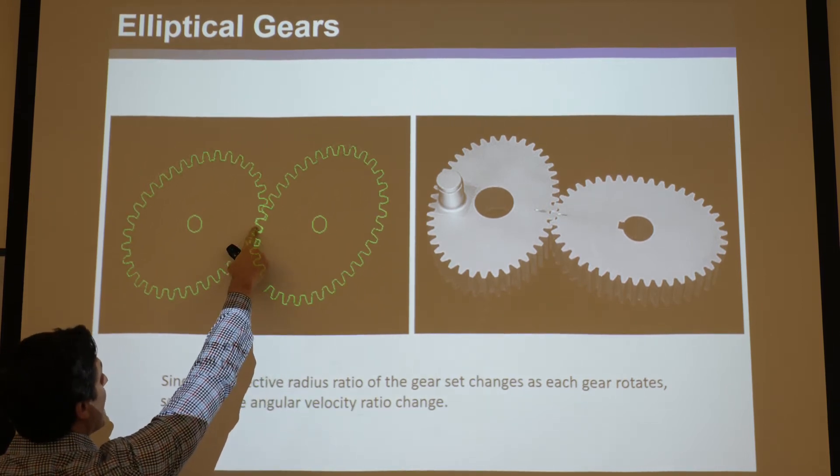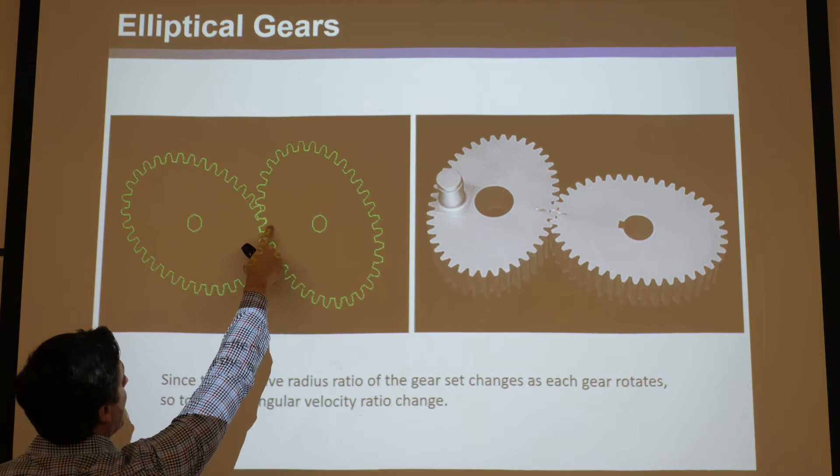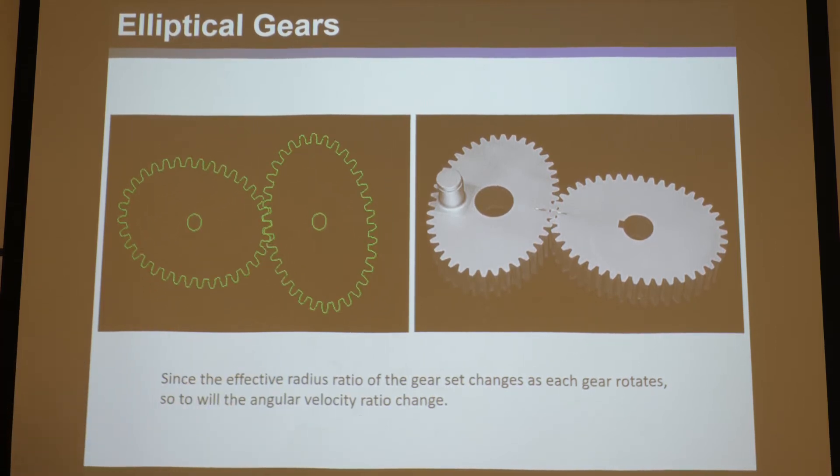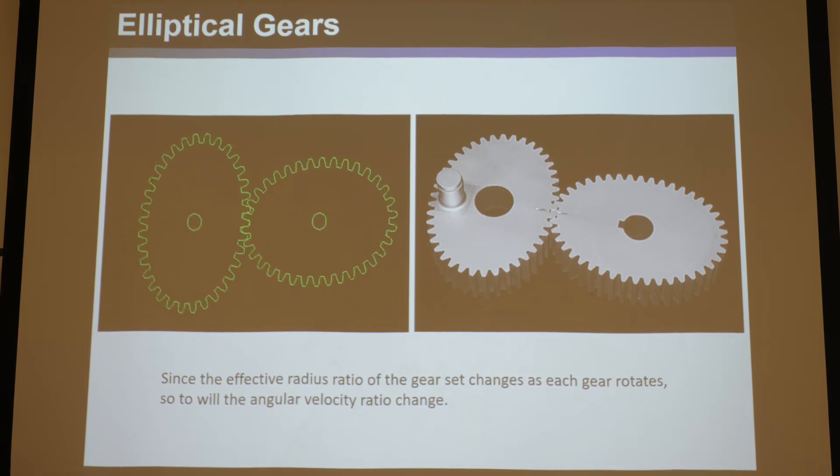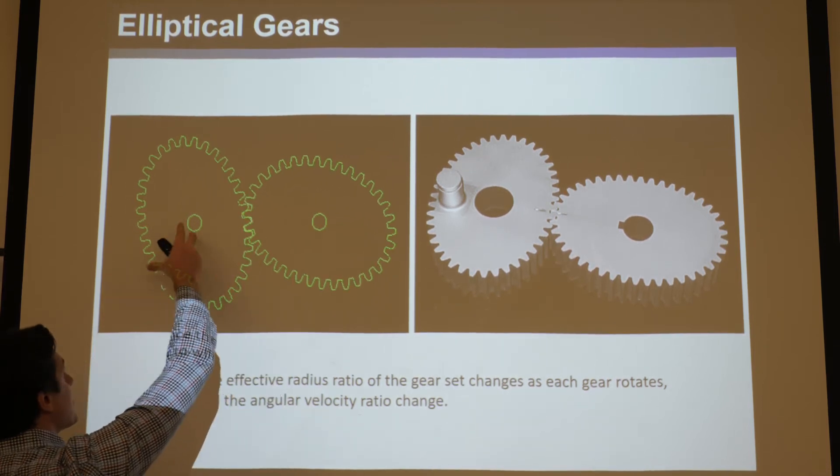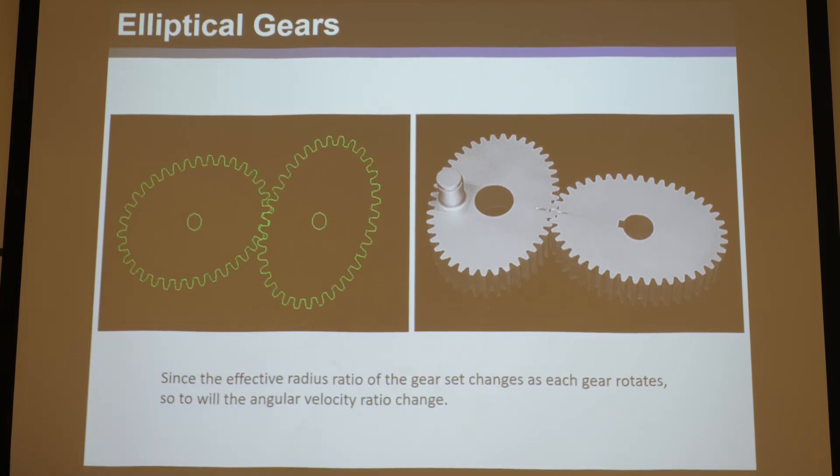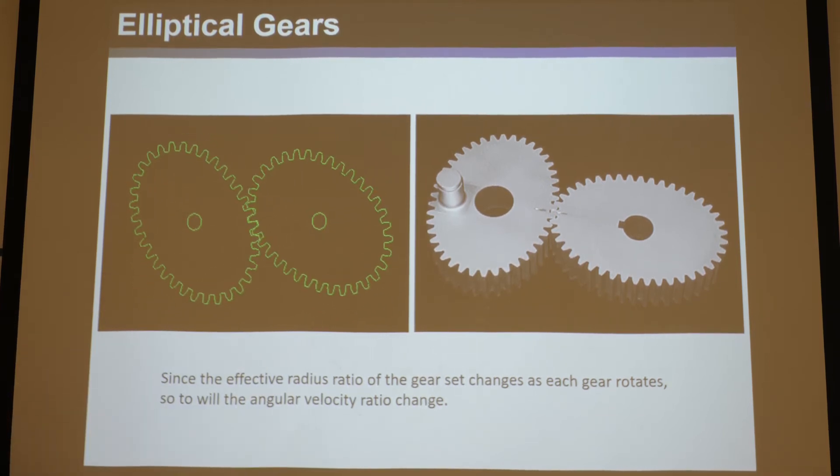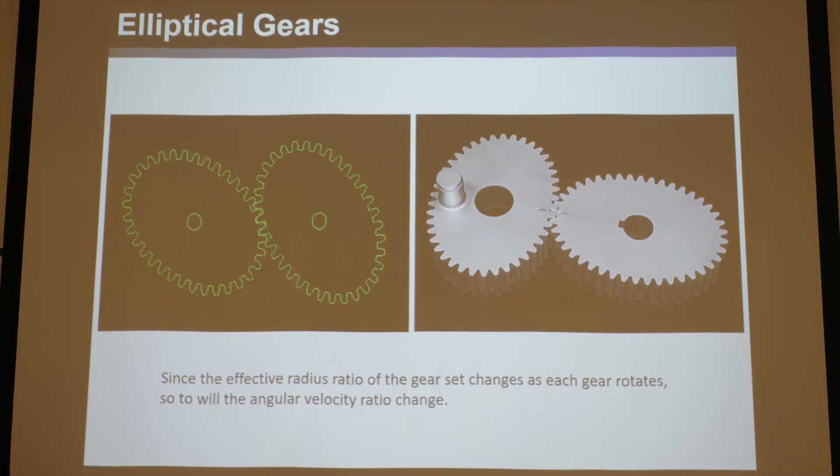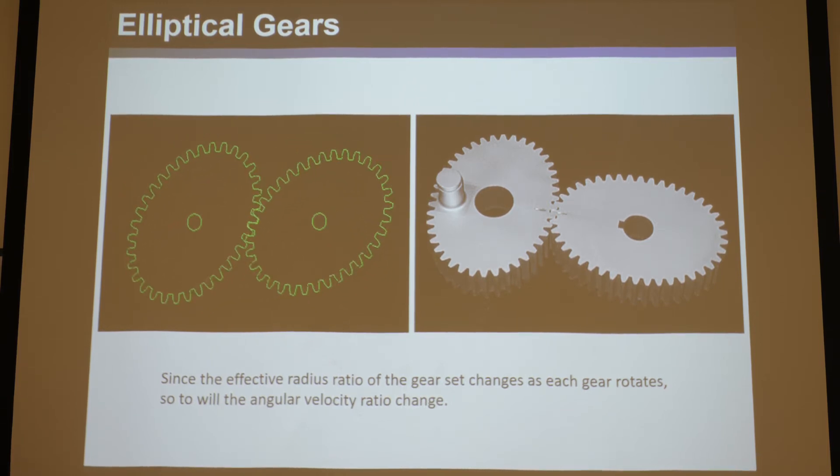can see the pitch point is oscillating back and forth here, and that means the radii ratio is changing, so the angular velocity ratio is changing. If you put a constant omega-2 in here, this one's going to speed up, slow down, speed up, slow down at a very specific rate. If you want that, then great - use elliptical gears. You can look up that ratio online.